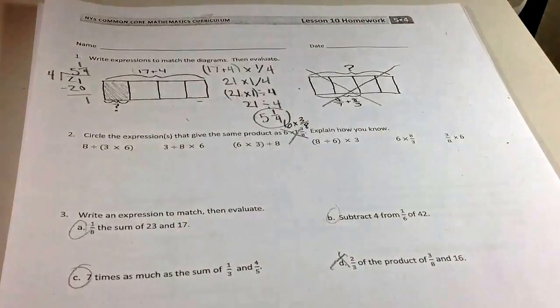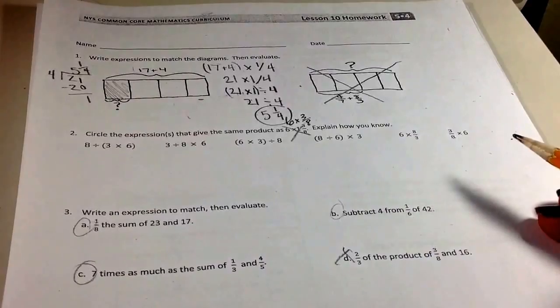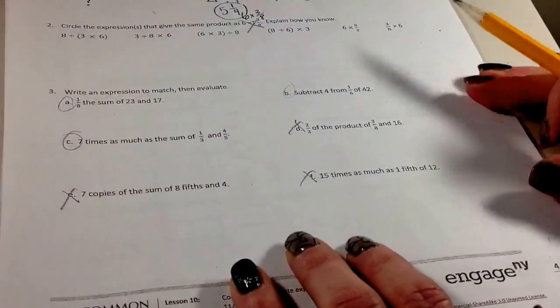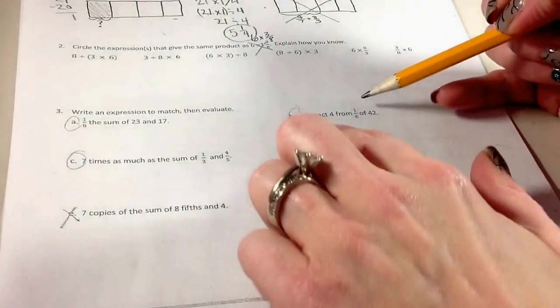Oh, 5 and 1 fourth. Okay. And then I would just circle that. So I'm going to go over a couple down here as well. So this one is, let's look at B.